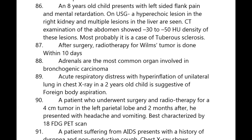An eight-year-old child presents with left-sided flank pain and mental retardation. Ultrasound shows a hyperechoic lesion in the right kidney and multiple lesions in the liver. CT examination of the abdomen shows 30 to 50 Hounsfield units density. This is most probably tuberous sclerosis — multiple liver lesions, hyperechoic renal lesion, and mental retardation.